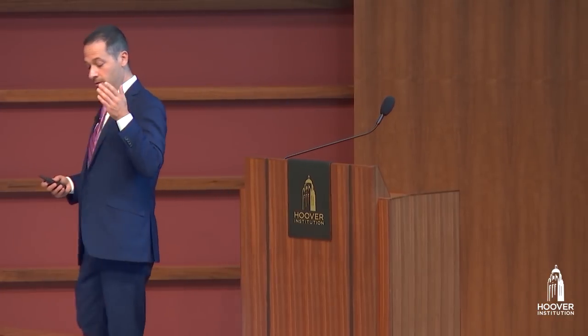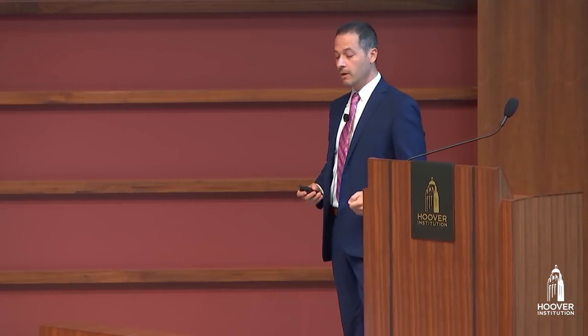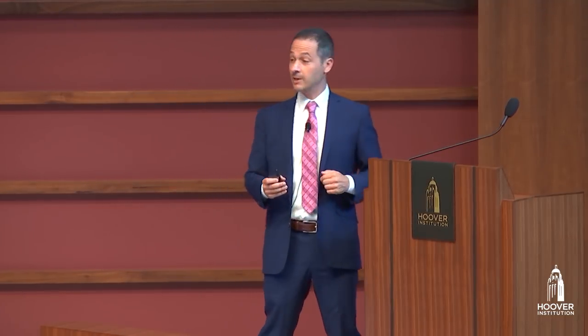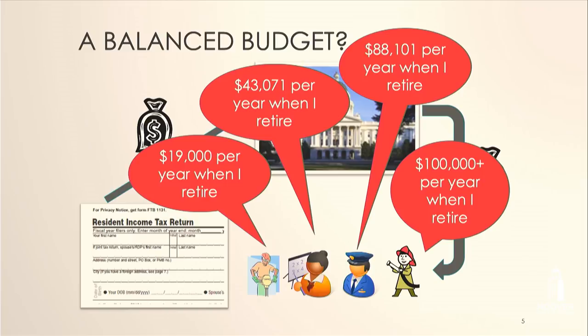A defined benefit pension is a much older model where the employer promises the employee monthly payments for life in retirement. These are annual numbers, but paid monthly. This means your employment relationship doesn't end when you leave — the employer still owes you money. The $19,000 figure is what public employee unions publicize as the average pension received, though it's somewhat misleading because it includes people who only worked for government for a short time.